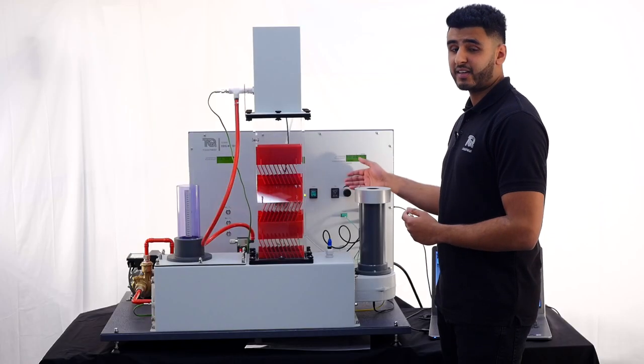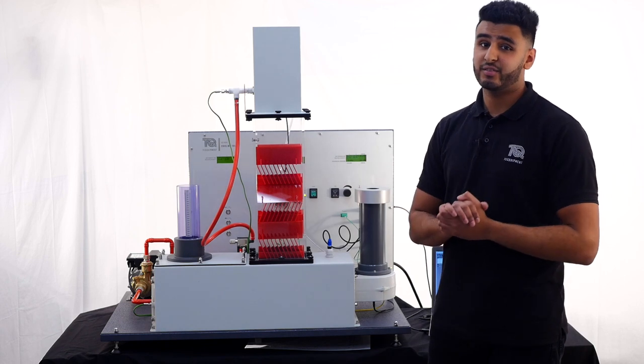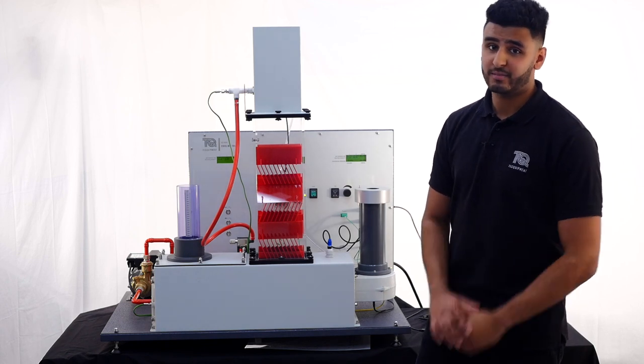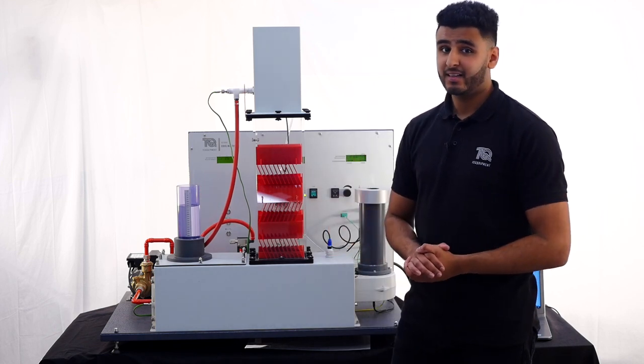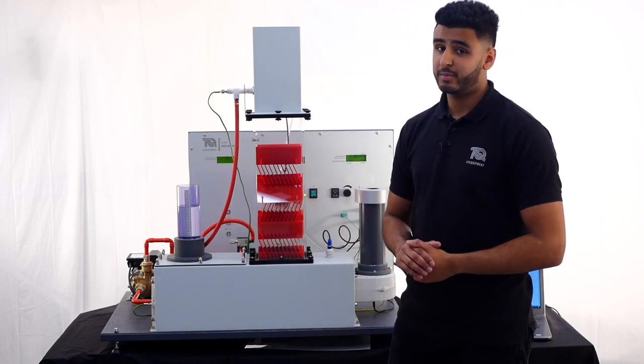Over here you can see the controls for the fan and water circuits that allow the students to adjust flow rates for a full range of experiments. This top-up vessel maintains a constant water level in the tank allowing the amount lost through evaporation to be measured.